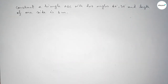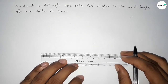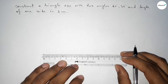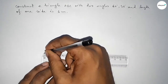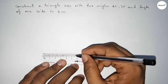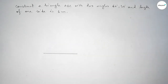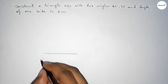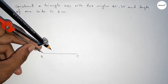Let's start the video. First of all, we have to draw a line of length 6 centimeters. Drawing a line of 6 centimeters and taking point B on one end and point C on the other.